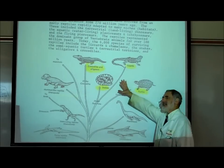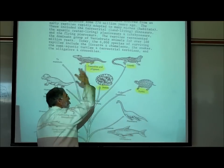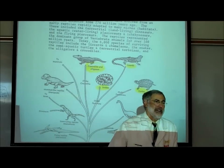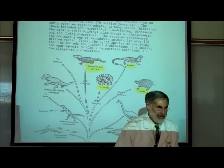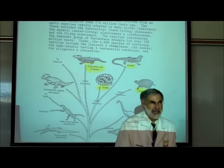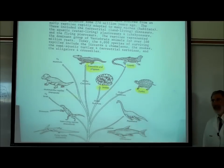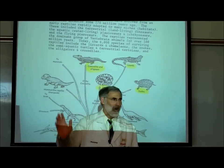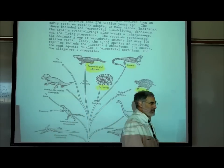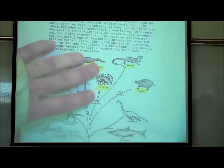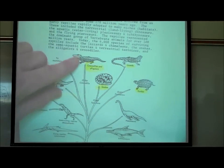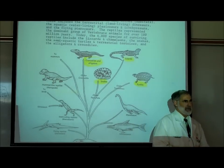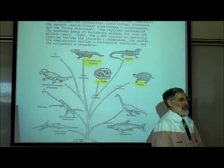At one time there were huge reptiles called the dinosaurs — all of them are extinct. The largest reptiles today are alligators. We've got alligators and crocodiles in the United States — in Texas, Mississippi, Alabama, Louisiana, and Florida. Snakes are reptiles, and turtles are reptiles — not amphibians — because they don't undergo metamorphosis.